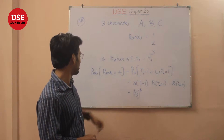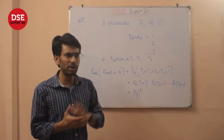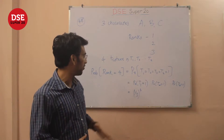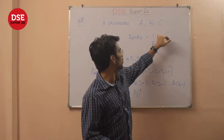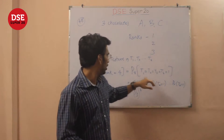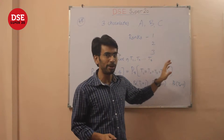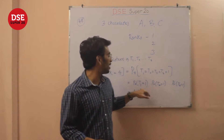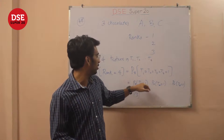We are asked: what is the probability of obtaining a rank sum of 4? It's easy to see that a rank sum of 4 can be obtained only if all the testers rank the chocolate 1. The probability of that happening, given that the testers rank these chocolates independently, is just a multiplication of all the probabilities that each tester assigns rank 1.